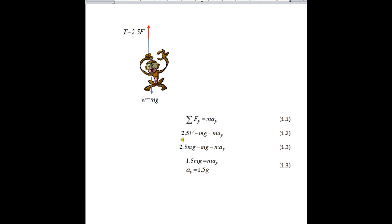So if we take the positive y direction to be upwards, then we can write the forces as 2.5 times F (that's the tension) minus mg. That's got to equal the mass times the acceleration. Now we knew from before in the first part that F is actually equal to mg, that's the amount we have to have to hold the monkey stationary.